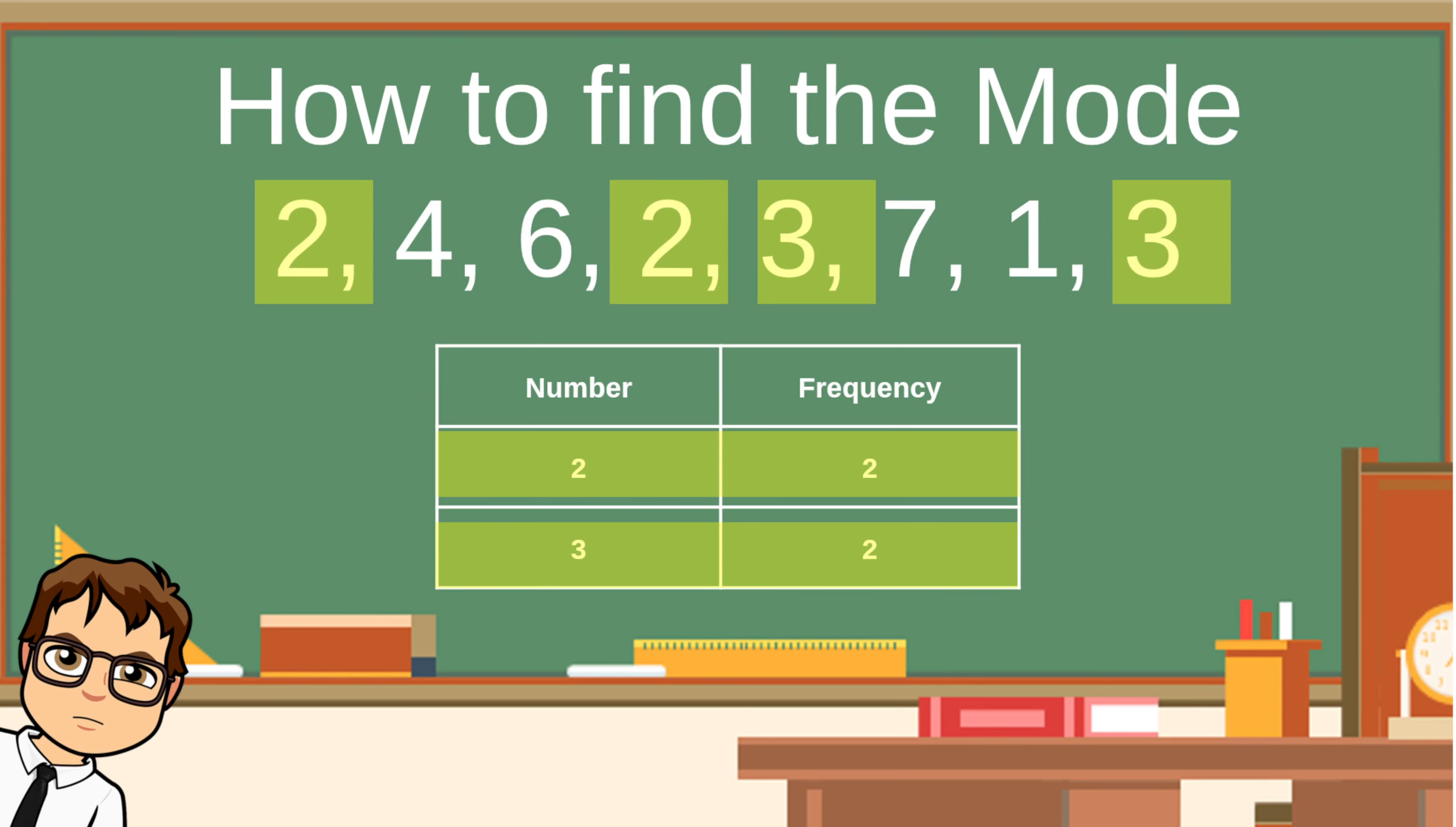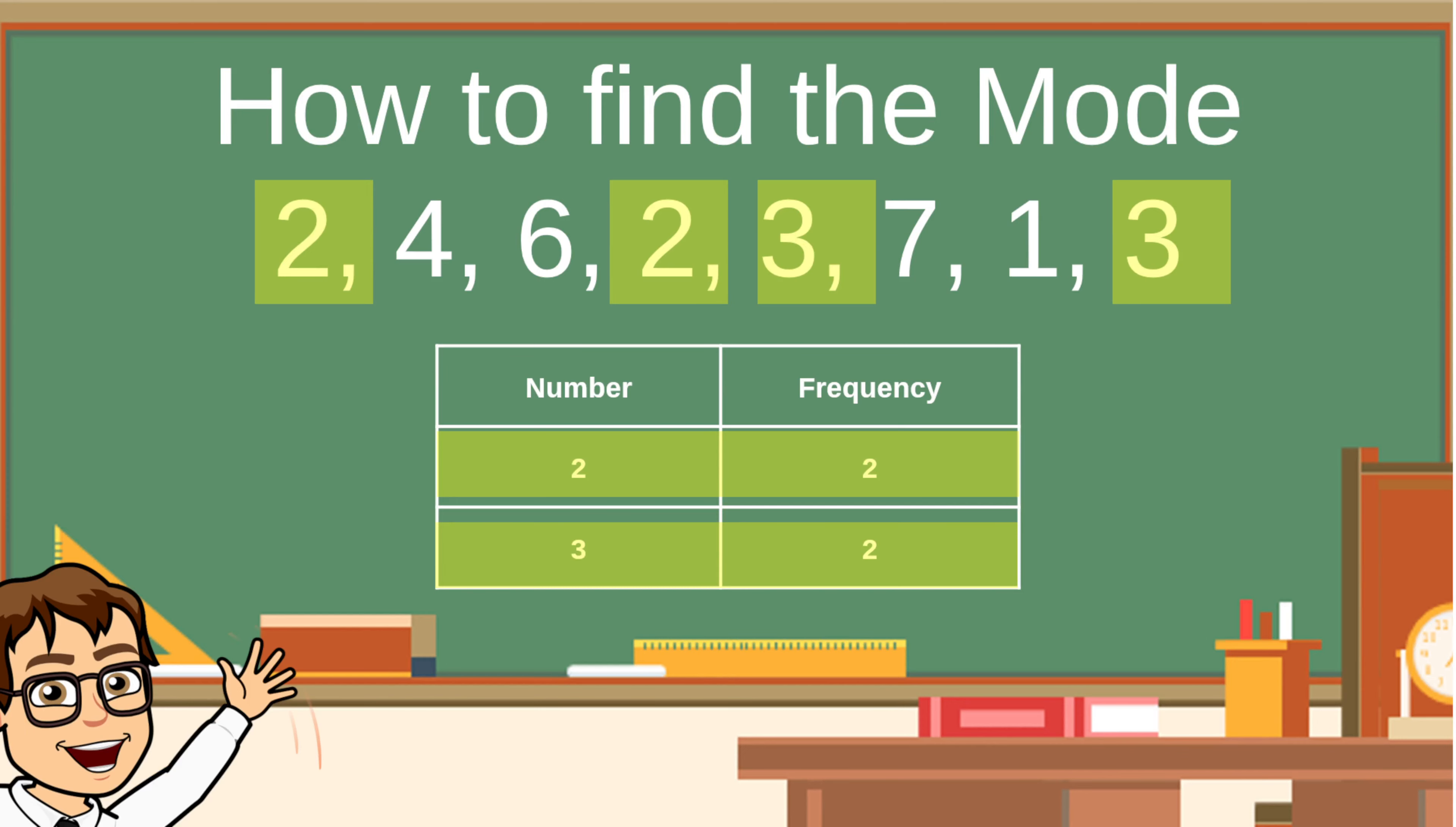Well, hold on a second. The twos and the threes both occur two times each, so which one's the mode? They both are. You can have more than one mode.